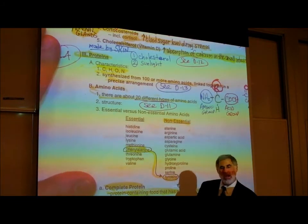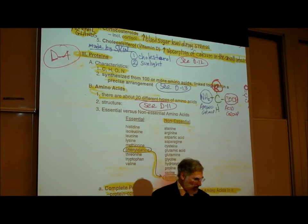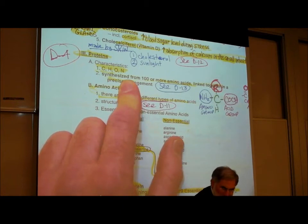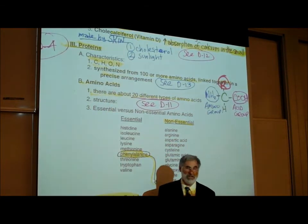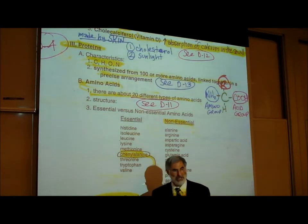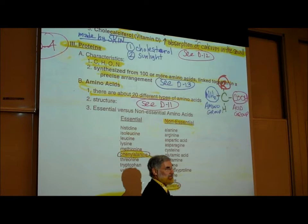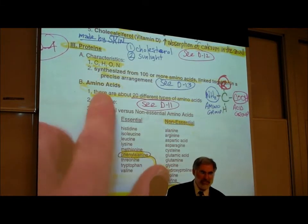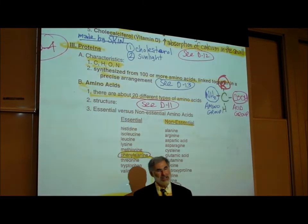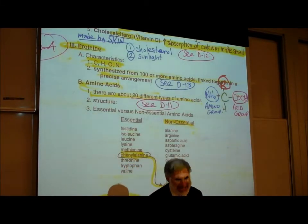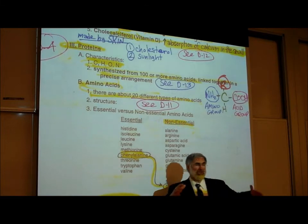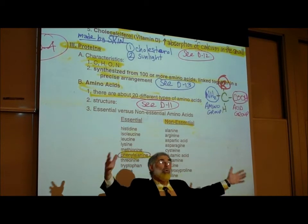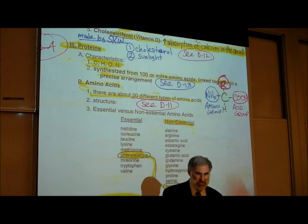Proteins are more complex than either carbohydrates or lipids. They are made up of carbon, hydrogen, oxygen, and nitrogen — four of the six most important elements that make up chemicals in living things (carbon, hydrogen, nitrogen, oxygen, phosphorus, and sulfur — SCHNOPS). Proteins are actually synthesized from 100 or more amino acids linked together in a precise arrangement. Each protein is made up of 100 or more amino acids linked together in a precise sequence.